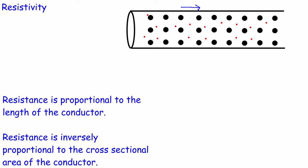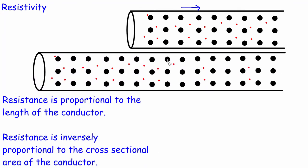Let's have a look at what happens if we change the length of a conductor. Here we've got exactly the same material with exactly the same diameter — it's simply longer. To get from one end to the other, the free electron has to get past all of these ions. It's more likely to interact with the ions simply because there are more of them, so it will feel a greater resistance. The longer the wire, the greater the resistance.